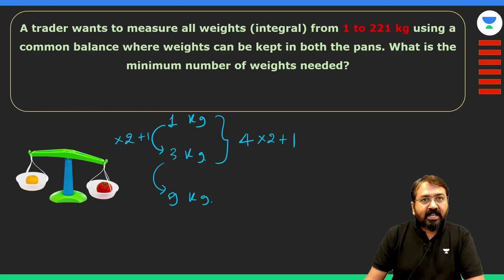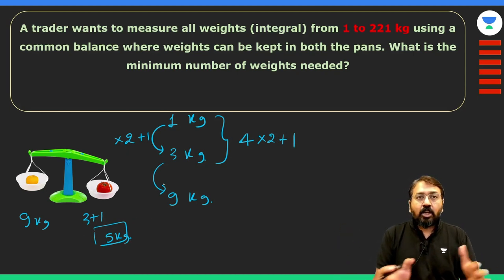How can we measure that? Let's quickly understand. For example, if I want to measure 5 kg, I will put 9 kg on the left pan and 3 plus 1 on the right pan, and along with that I can put the commodity. So this commodity will be of 5 kg. Similarly, if I want to measure 6 kg, it will be 9 and 3, and along with the 3 kg weight you can put the commodity, and so and so forth.